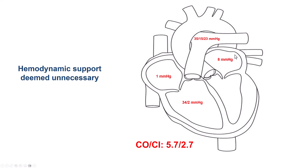Given the low ejection fraction, we routinely perform right heart catheterizations. In this case, the patient was doing well: wedge pressure was 8 mmHg, RA pressure was 1, cardiac output was 5.7 with an index of 2.7. We decided to perform the procedure without hemodynamic support.